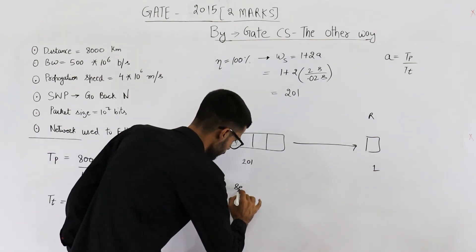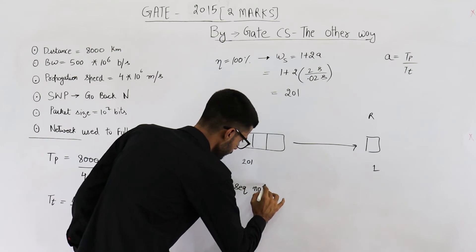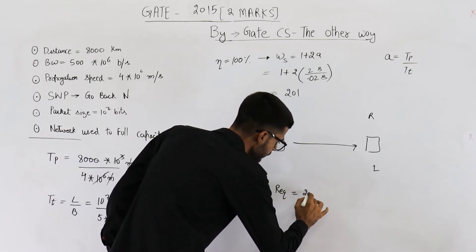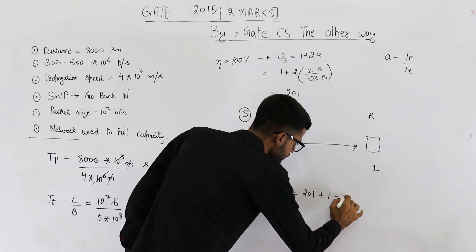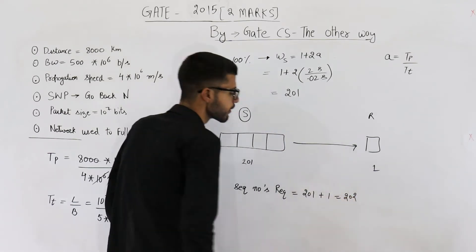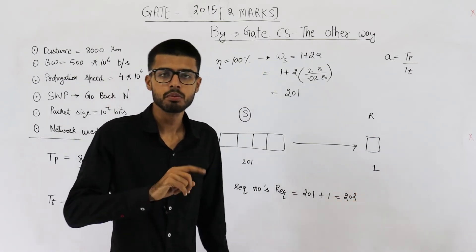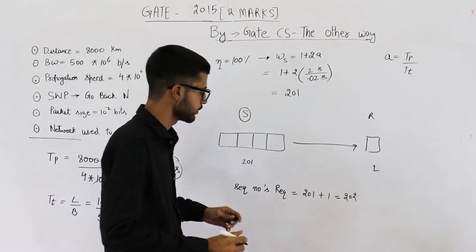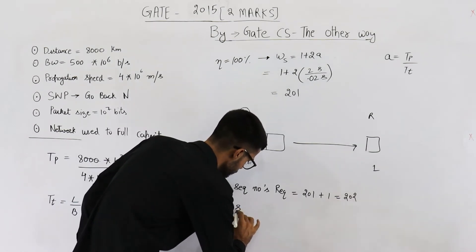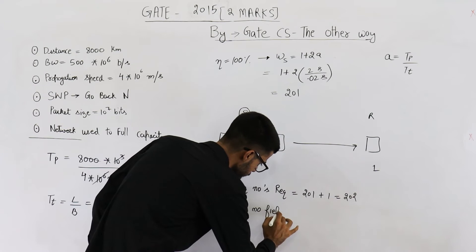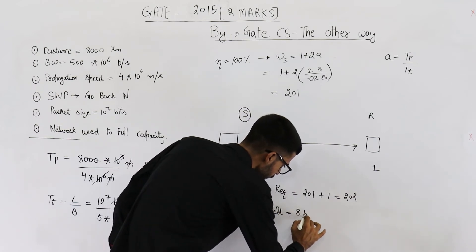Sequence numbers required are always equal to sender window size plus the receiver window size. Sequence numbers required are 201 plus 1 equals 202. To represent this number 202, you require minimum of 8 bits. That means sequence number field is of 8 bits.